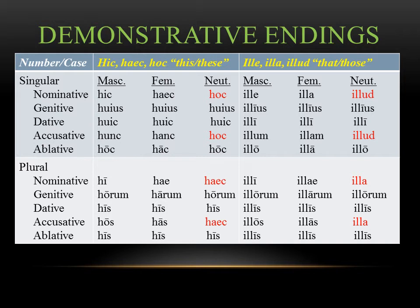For the neuter, remember that the nominative and accusative are always the exact same thing. For hic, haec, hoc, the nominative and accusative singular are both hoc (h-o-c). For ille, illa, illud, the word illud is both nominative and accusative singular, and illa is both nominative and accusative plural. The neuter plural ending in a follows the same pattern we've seen with second declension nouns.